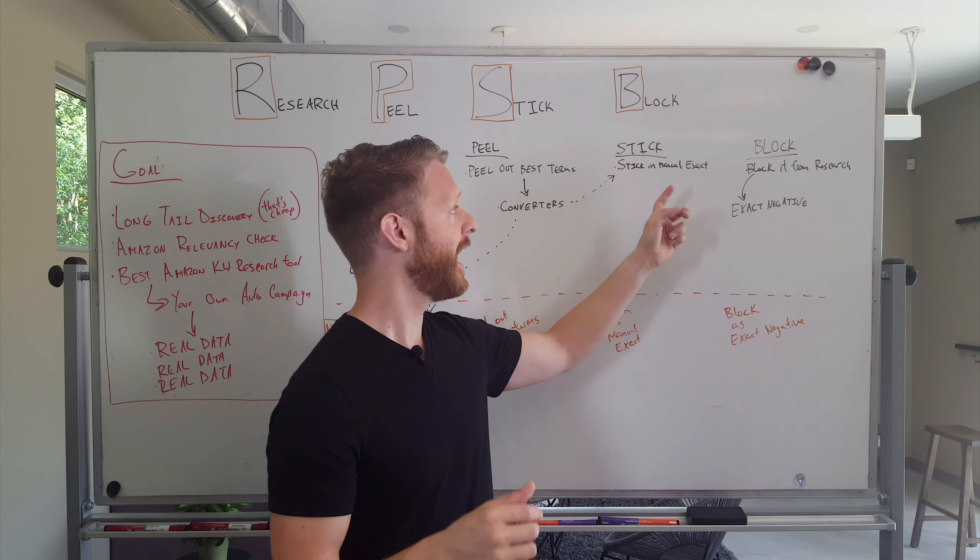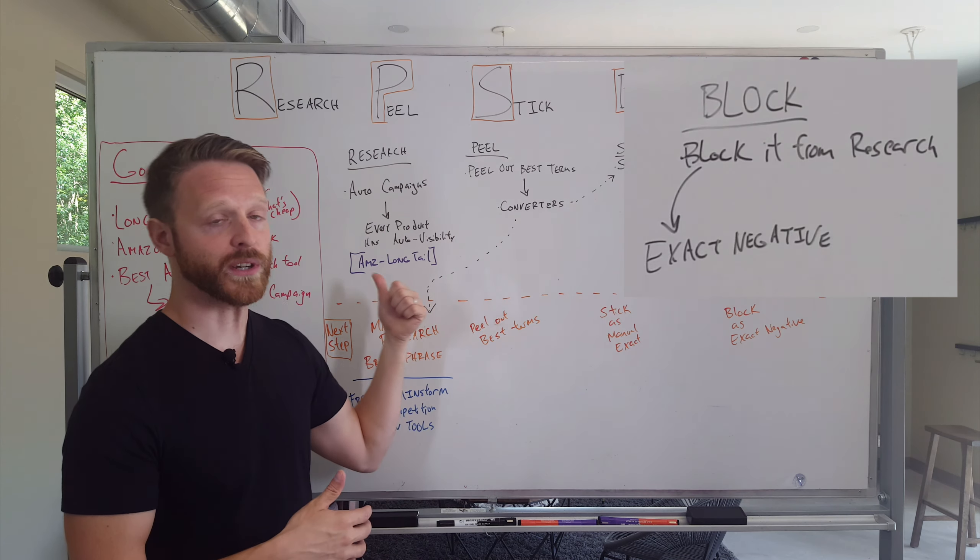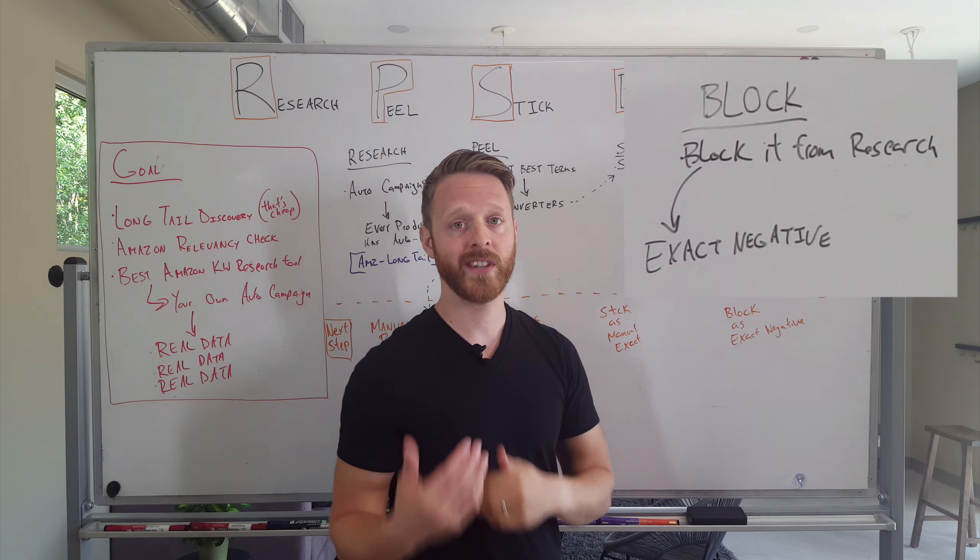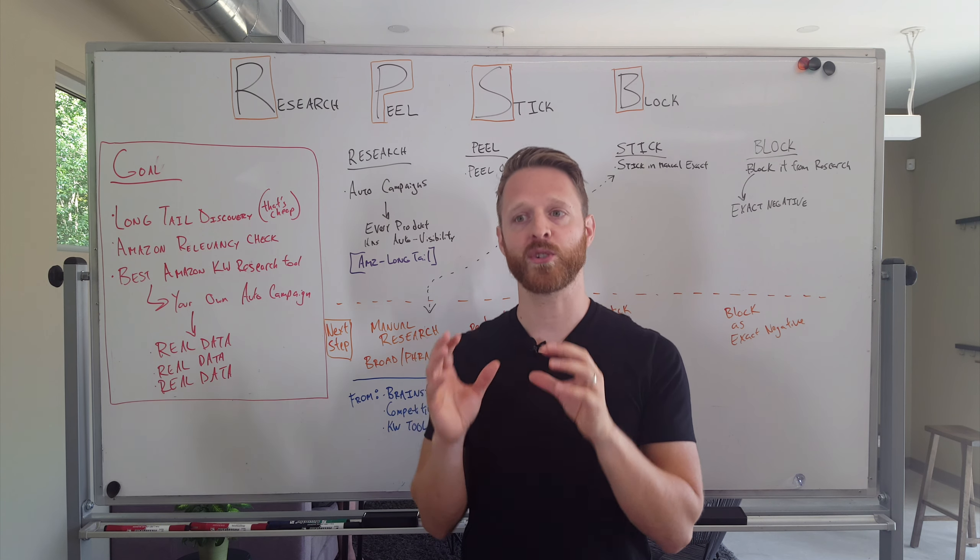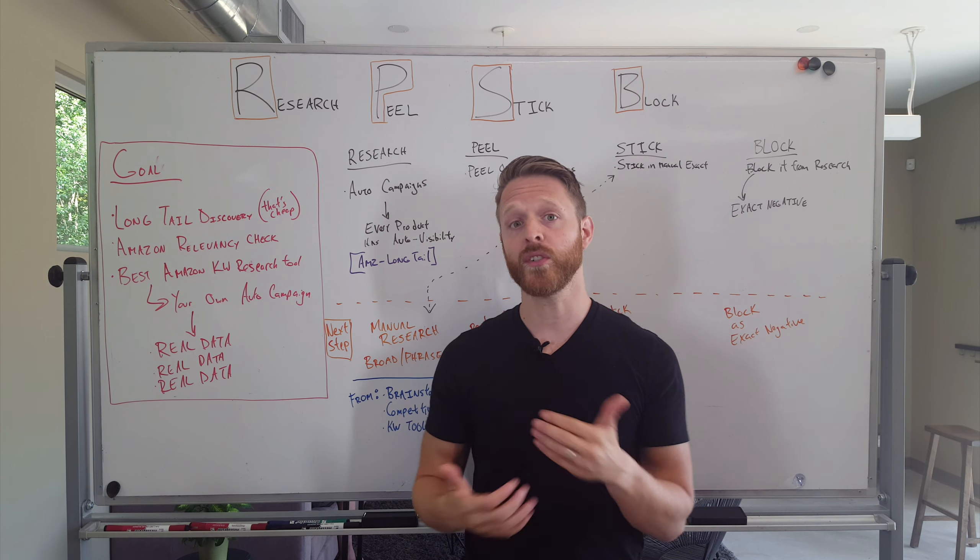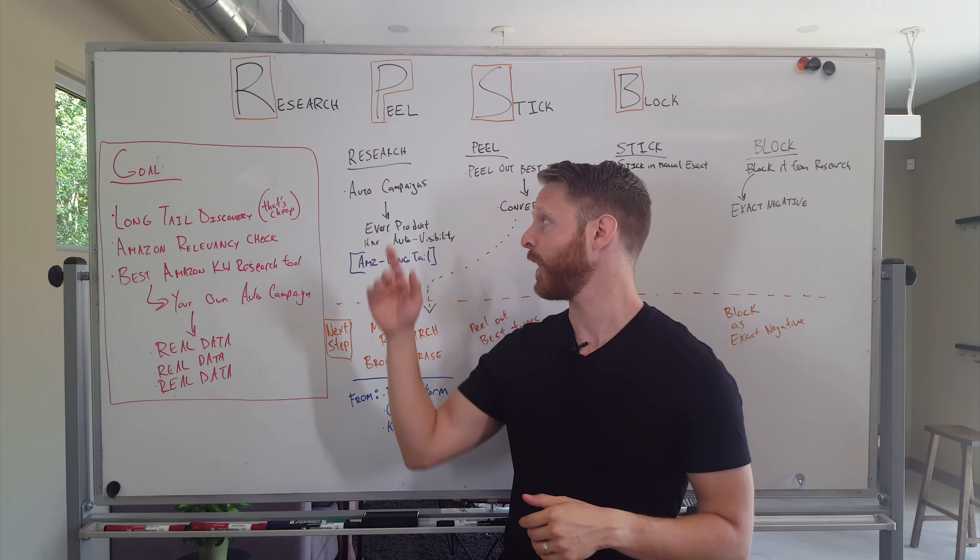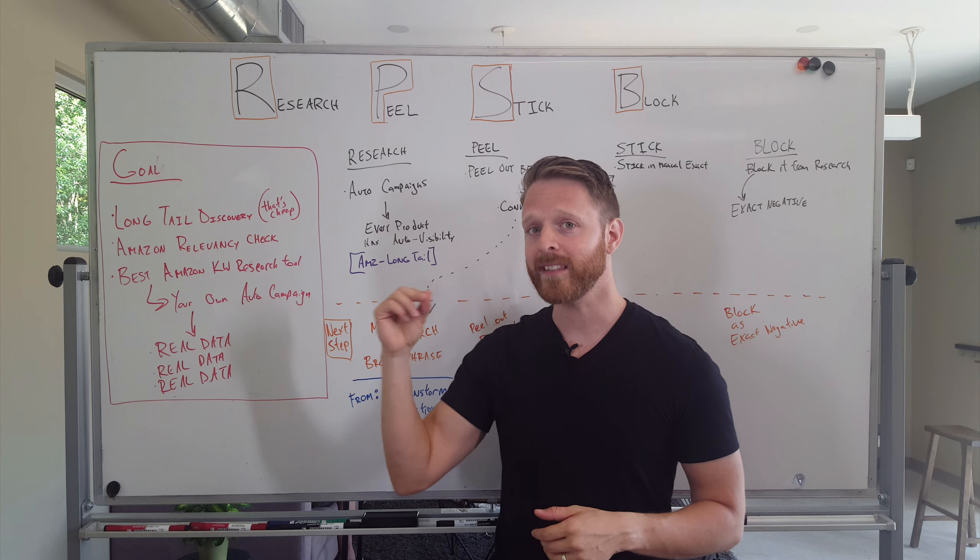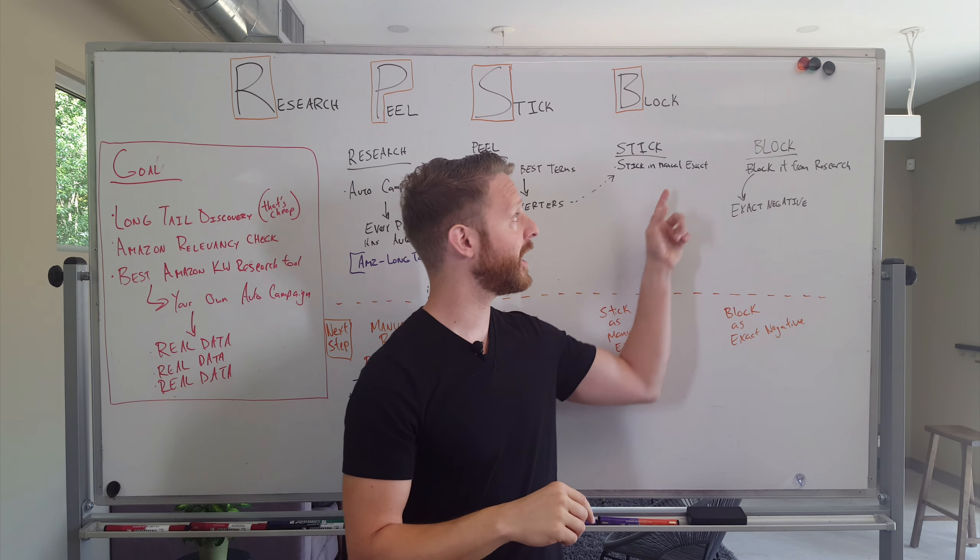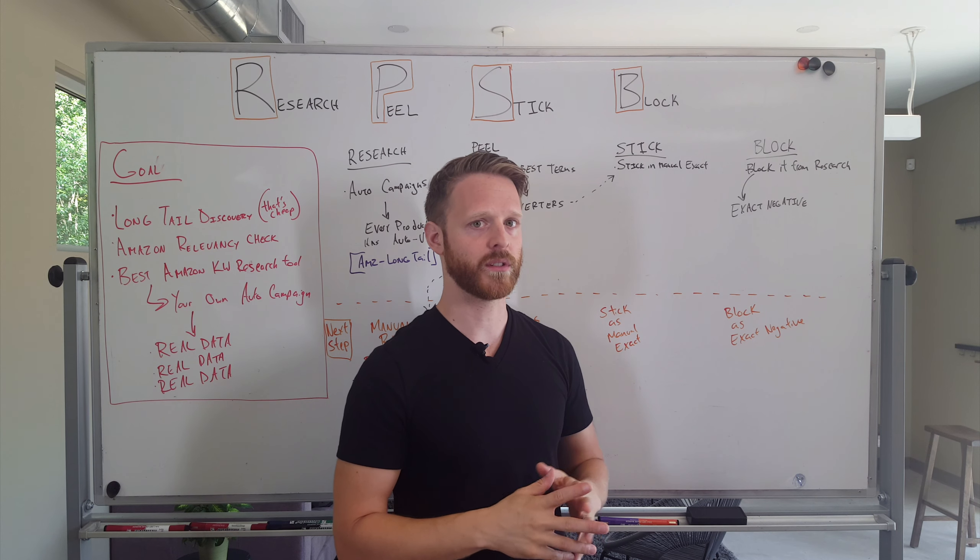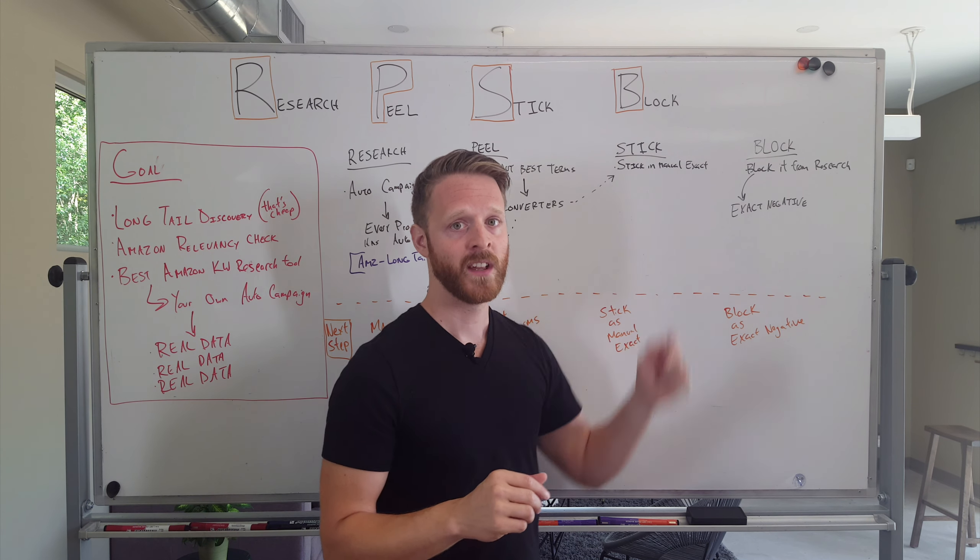And then I block it. I block it from my original research campaign as an exact match negative. And the reason why I do this is to funnel and sort of sculpt my traffic the way that I want it to. This is called negative keyword sculpting, which basically means instead of triggering in my auto campaign where I'm bidding the average for thousands of terms, I want it to show up in my exact match sort of winner's circle campaign, because I want to bid exactly what this keyword is worth.